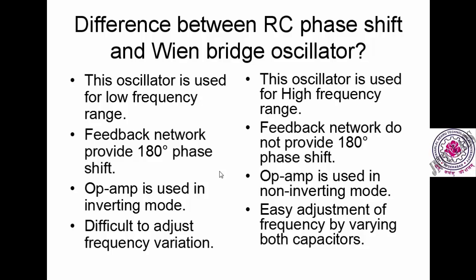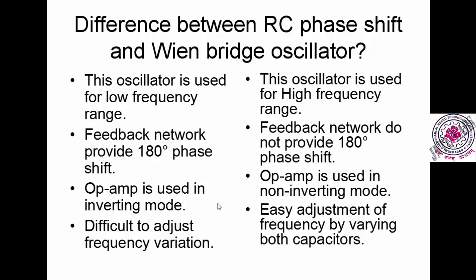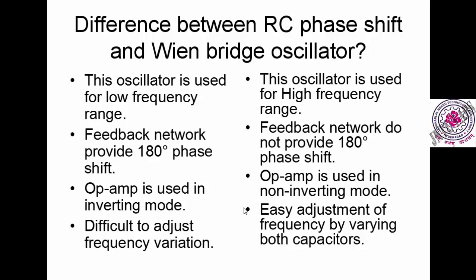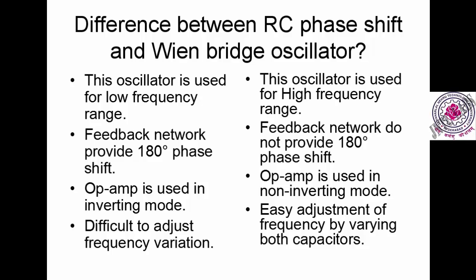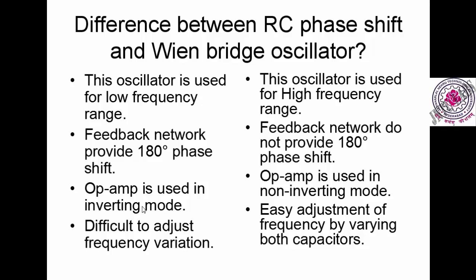In the Wien bridge oscillator, the feedback network does not provide a phase shift — 180 degrees phase shift means phase shift equals zero, which also satisfies Barkhausen criteria. In the RC phase shift oscillator, the inverting mode of the op-amp is used; in the Wien bridge, the non-inverting mode is used. It is very difficult to adjust frequency variation in the RC phase shift oscillator, whereas in the Wien bridge it is very easy by varying both capacitors. In the RC phase shift oscillator, you have to change both R and C values since the formula is f = 1 / √(RC), and the loop gain must equal unity.